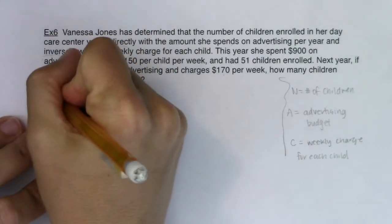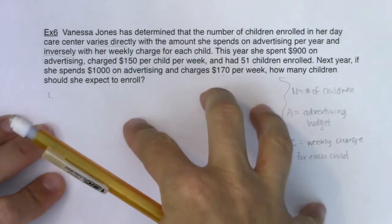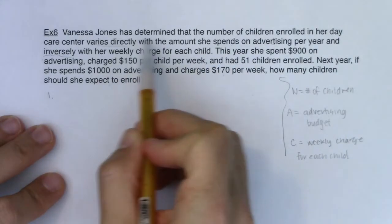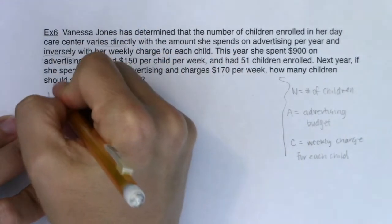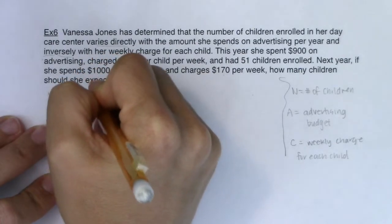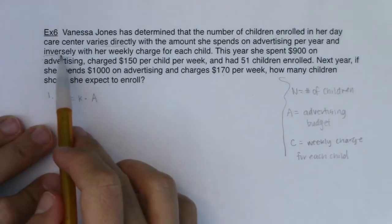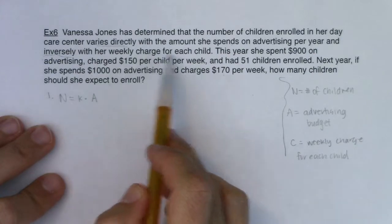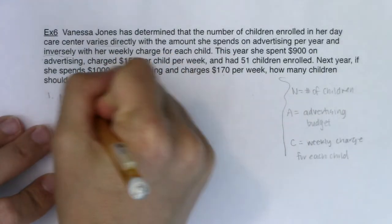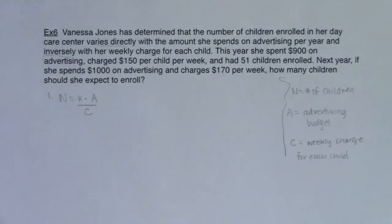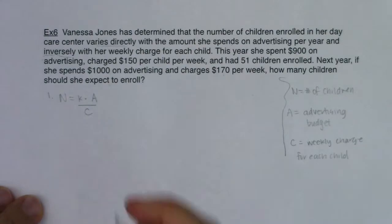Let's run through our four steps. Step one is to get an equation for the variation problem. It says number of children varies directly with advertising, so n = k times a. Because when you vary directly you use multiplication. But I also have 'varies inversely' with the weekly charge per child, so I divide by c. Because I have more than two variables, this is joint variation — joining direct and inverse — and nothing is squared here.